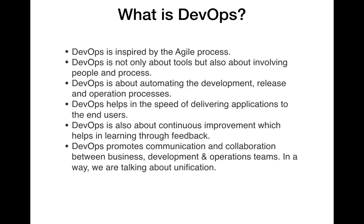Once committed, code should be built if required, deployed, and tested automatically. DevOps is a methodology where things are automated and working in a proper process. It helps speed the delivery of applications to end users — as soon as any component is ready, we don't wait for the entire product. If a new feature is developed and has no dependency on other components, it should be delivered.